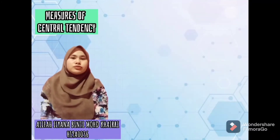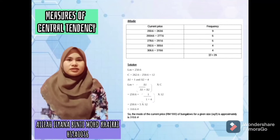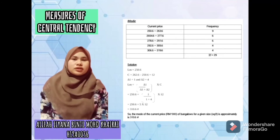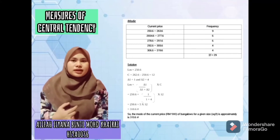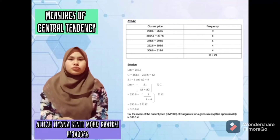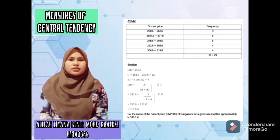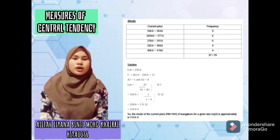The last one, we go to the mode. Mode is: if there is no entry repeated, the data set has no mode. If 2 and 3 occur with the same greatest frequency, each entry is a mode. This is the solution — follow the formula given. You have to find your LM and class size. Our LM is 250.6 and our class is 262.6, your C is 12, and then you will get the answer for the mode: 3731.06.